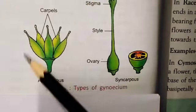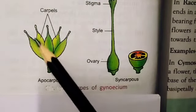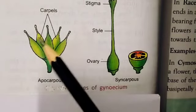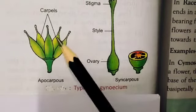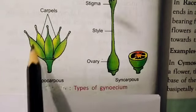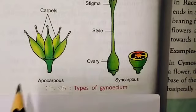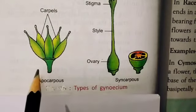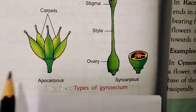In apocarpous gynoecium, the carpels are free. As you can see in this diagram, the carpels are free. In this condition, we call it apocarpous, and this apocarpous gynoecium you can see in roses.